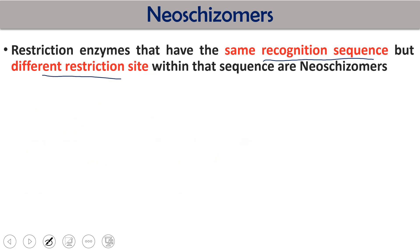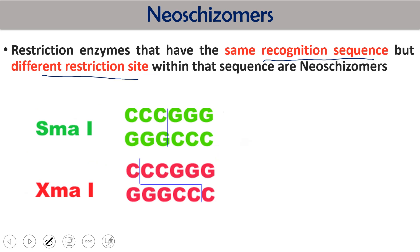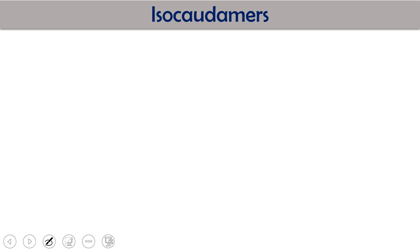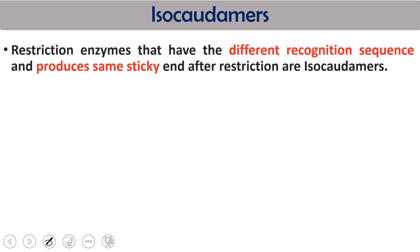The second term is neoschizomers: those restriction enzymes with the same recognition site but different restriction sites. For example, SmaI and XmaI both recognize CCCGGG, but SmaI cuts in the center producing blunt-ended DNA, while XmaI cuts at the first and second nucleotide producing sticky-ended DNA. Same recognition site, different restriction site, different product — these are called neoschizomers.